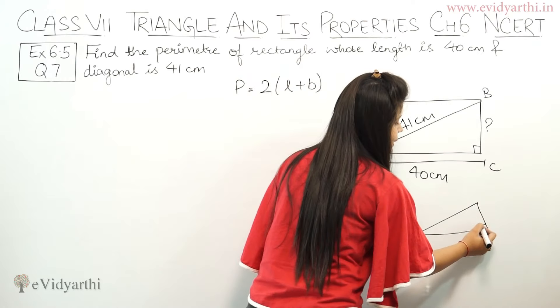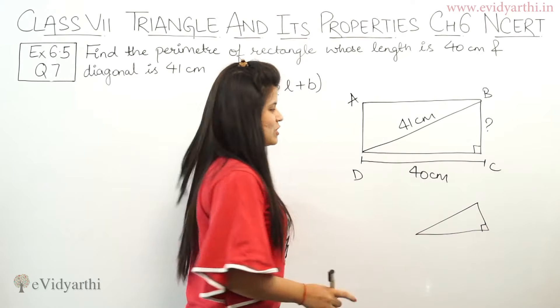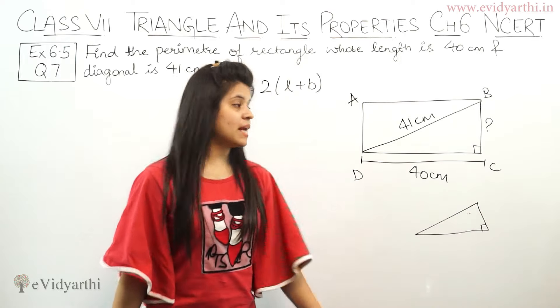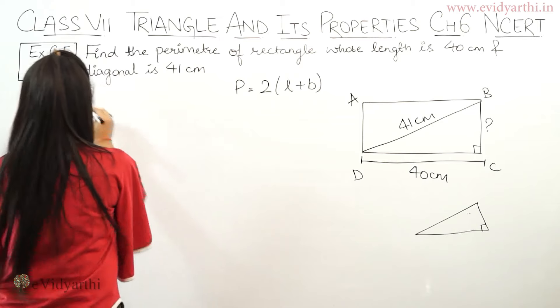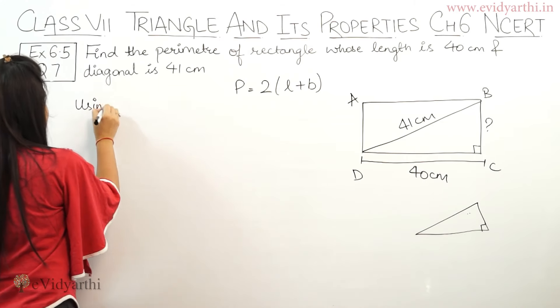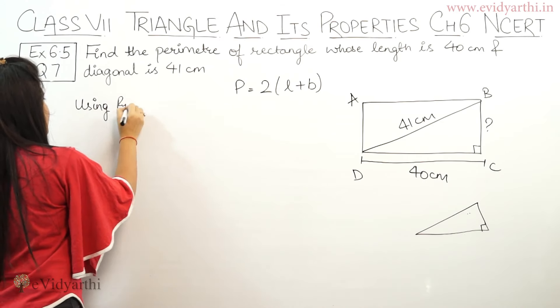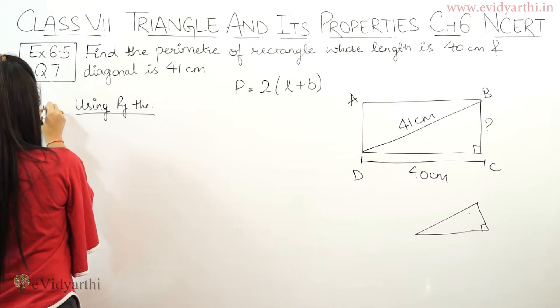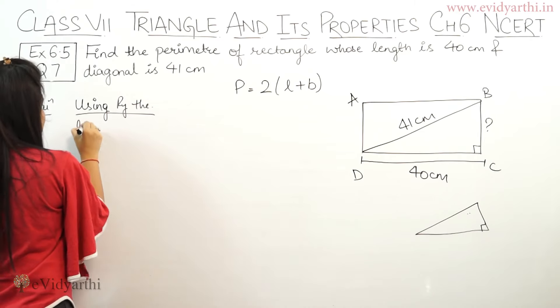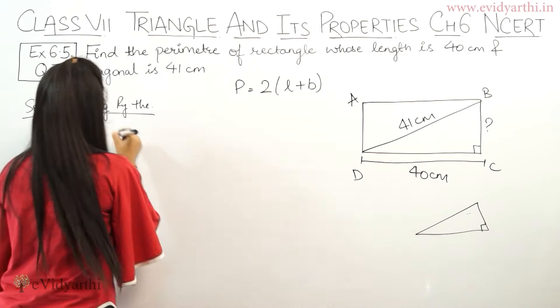So what can we do in a right triangle? We can use Pythagoras theorem. So with this help, we can find BC. So first, using Pythagoras theorem in triangle BCD.